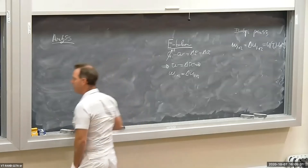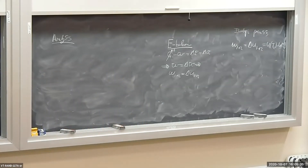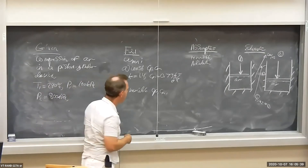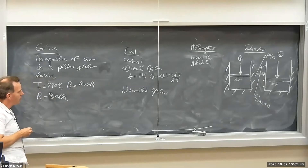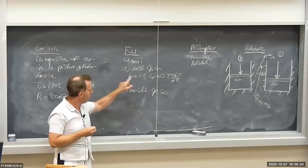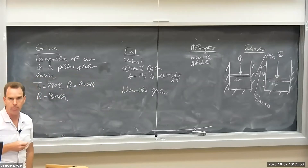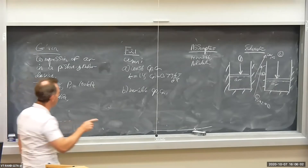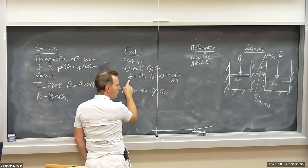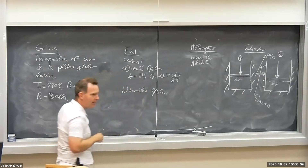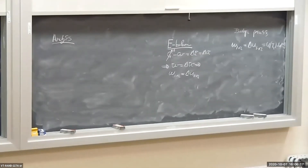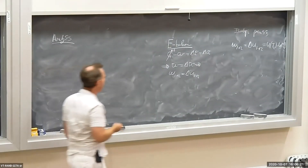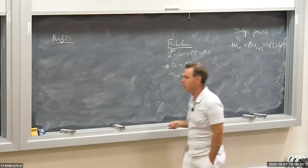Looking at the problem statement: we're going to find the minimum work in two ways. Part A will assume constant specific heat, and Part B will assume variable specific heat — the true value. The constant specific heat gives us an approximation. Note that k = Cp/Cv = 1.4 and cv = 0.73 kJ/(kg·K) are provided.